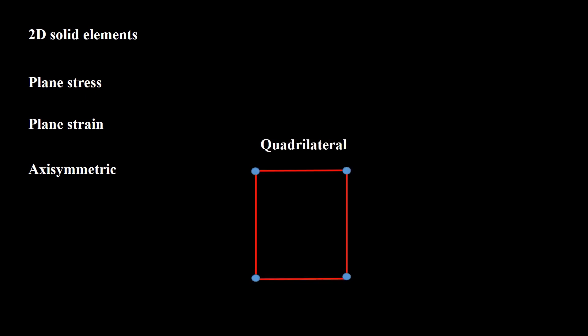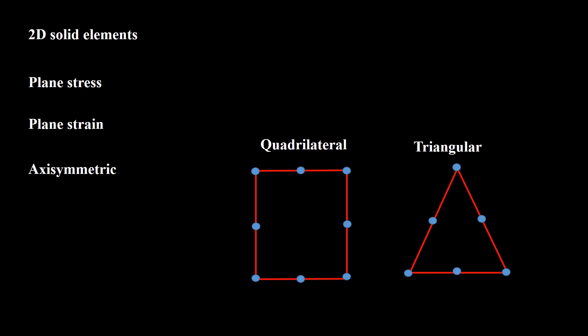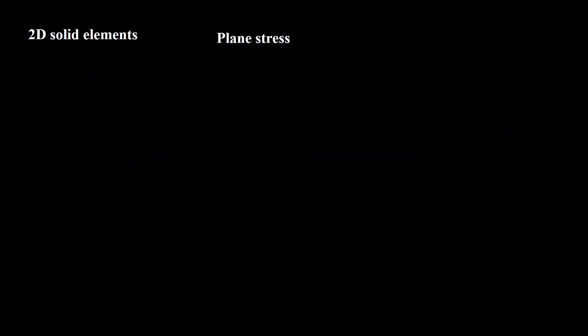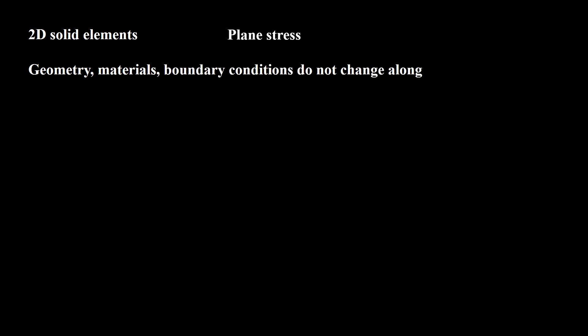First, we check the possibility of using two-dimensional solid elements because they are more efficient than 3D elements. 2D solid elements include plane stress, plane strain, and axisymmetric elements. They can be quadrilateral or triangular; quadrilateral elements are more efficient and accurate. Both linear and quadratic formulations of these elements are available.